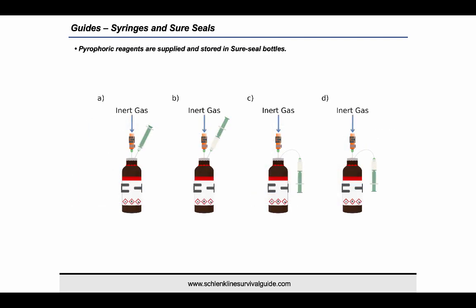Pyrophoric reagents and other air and moisture-sensitive species are supplied and stored in bottles with Sure/Seal closures or other penetrable septum. These must be fed with inert gas whilst dispensing the reagent to ensure a positive pressure of inert gas is maintained in the bottle. A syringe and needle are first purged with inert gas, ideally using the septum on the receiving Schlenk flask, and then penetrated into the reagent bottle. Slightly more liquid than is required is withdrawn into the syringe, then it is inverted and depressed to remove the gas bubble and reach the desired volume, before being transferred into the receiving Schlenk flask.